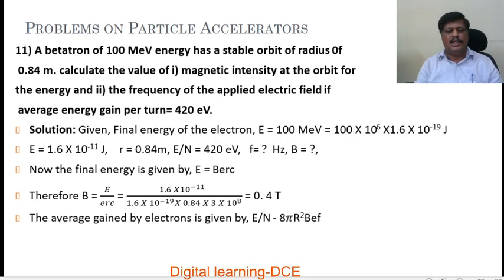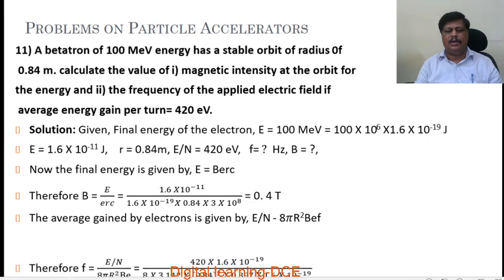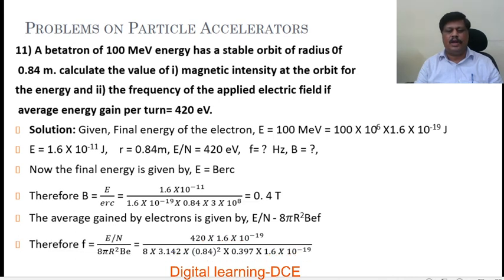The average energy gained by electrons is given by E by n equals 8 pi r squared B e f. Equating for f: f equals (E by n) divided by (8 pi r squared B e). Substituting all the values and simplifying, we get the value of frequency as f equals 60 Hz.